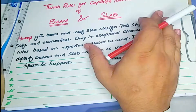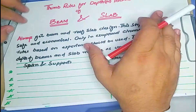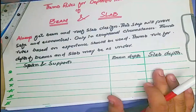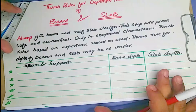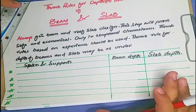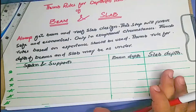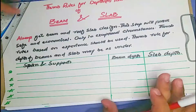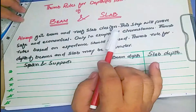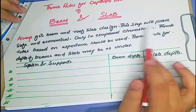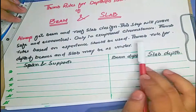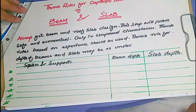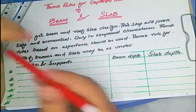Today's lecture is about thumb rules for depth or thickness of beams and slabs. Thumb rules are derived from experience and many experiments — they are essentially shortcuts. However, using thumb rules alone is unsafe; beams and roof slabs should always be properly designed. Thumb rules based on experience should be used only under experimental or preliminary circumstances.